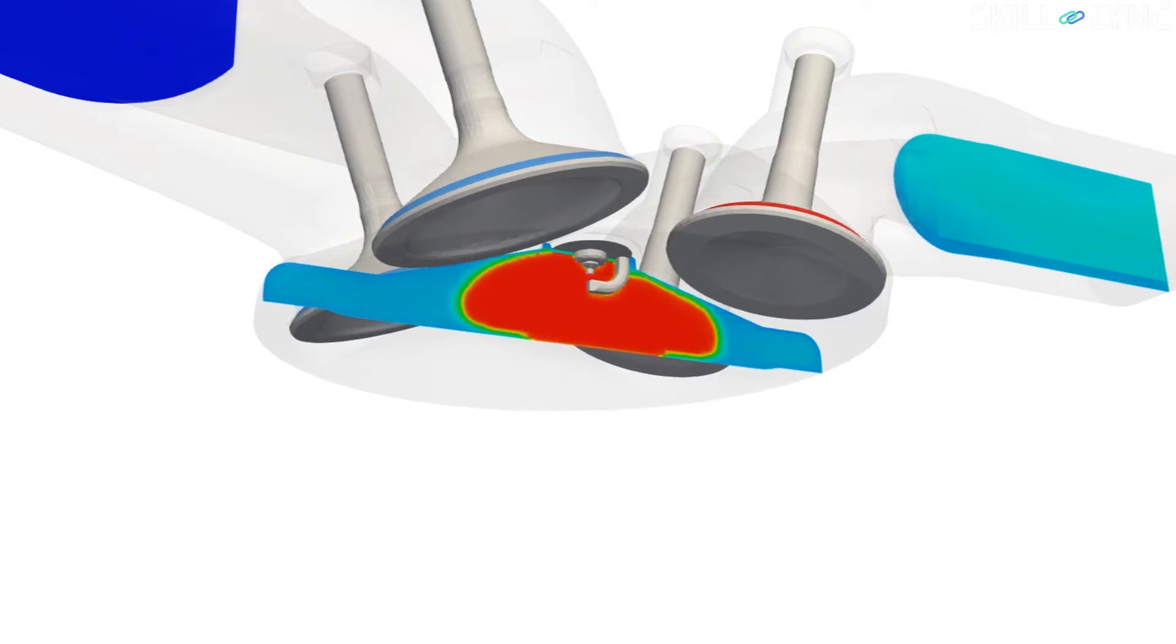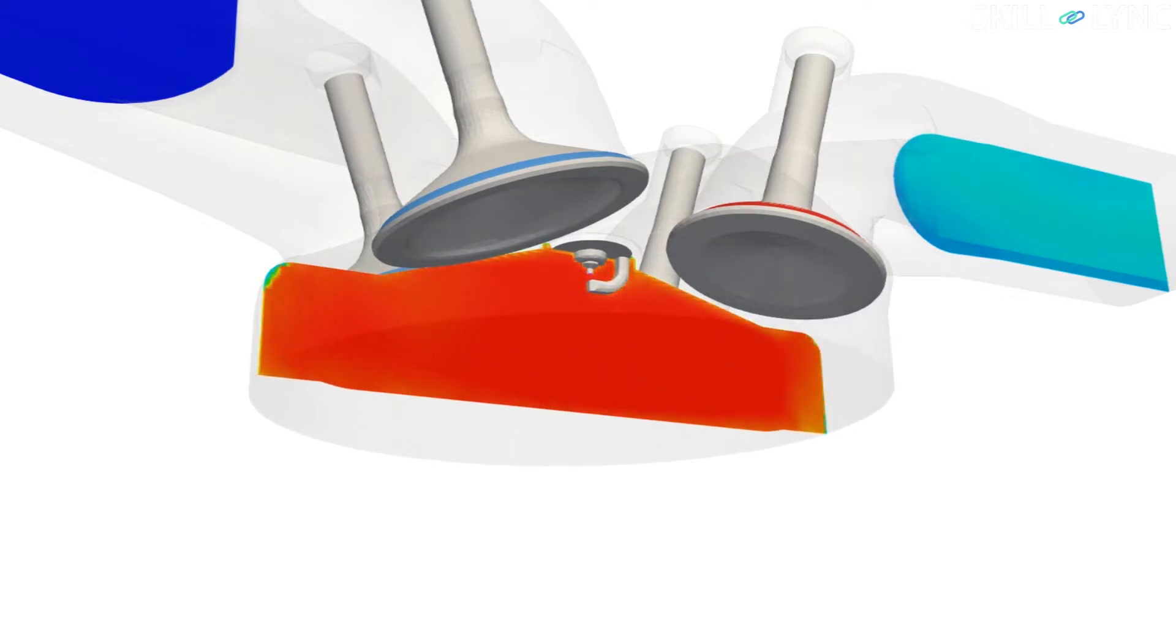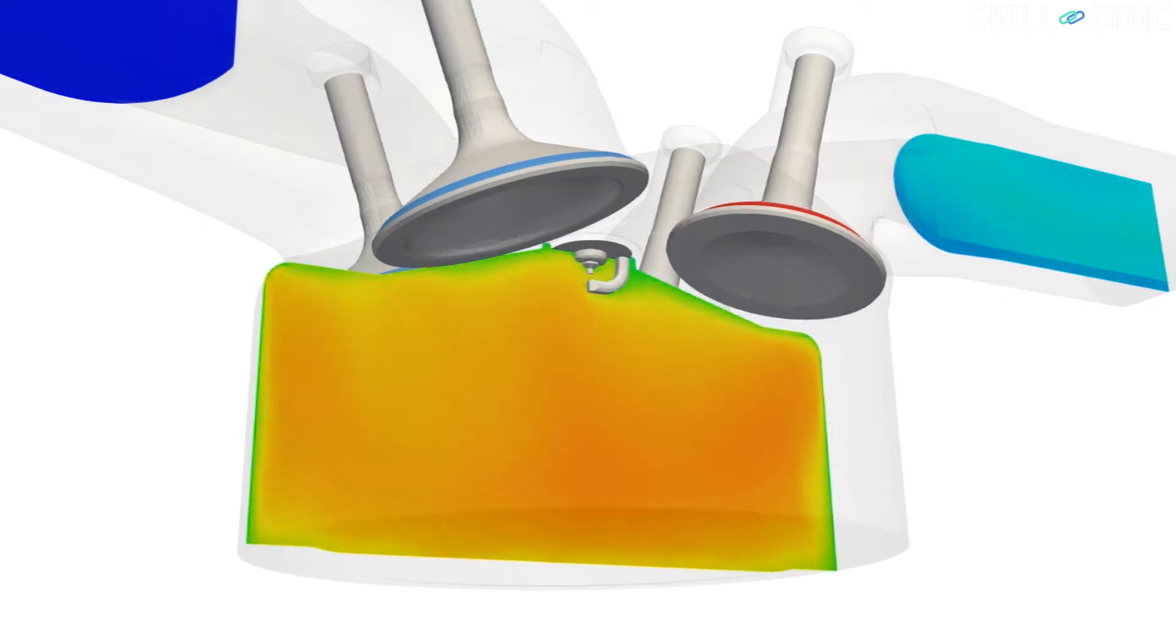inside an internal combustion engine, combustion takes place. Because of combustion, heat is released inside the entire combustion chamber, which looks like a cylinder. This is what we refer to as heat source, volumetric heat generation, or sometimes simply energy source.